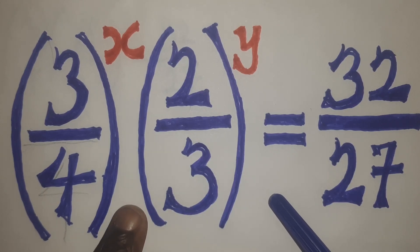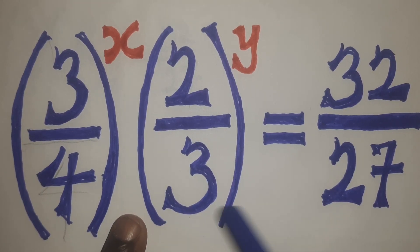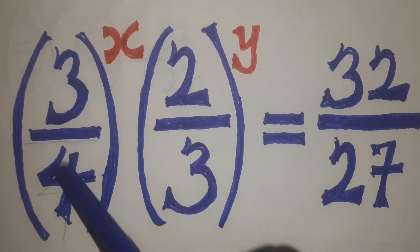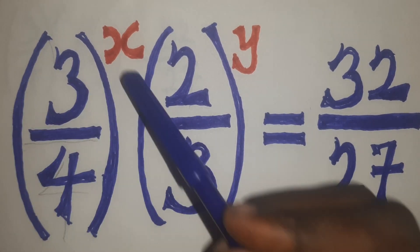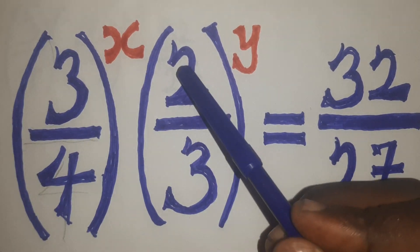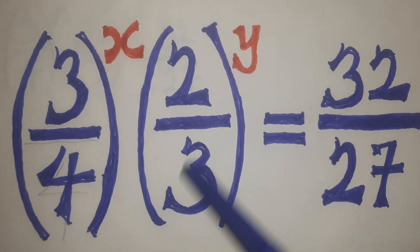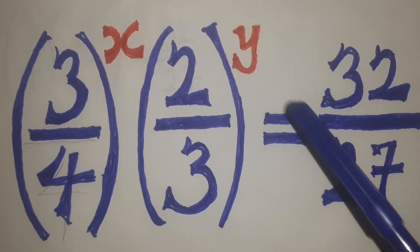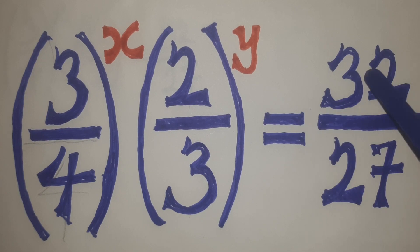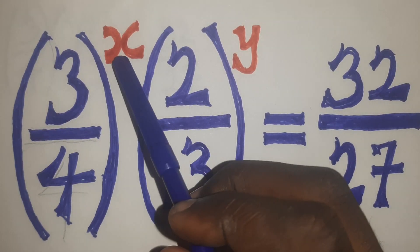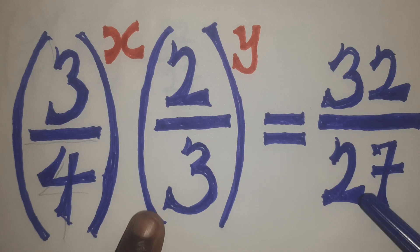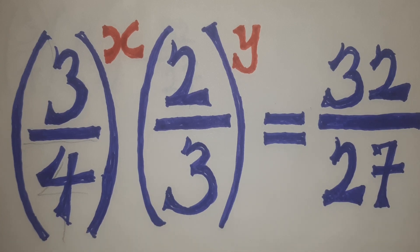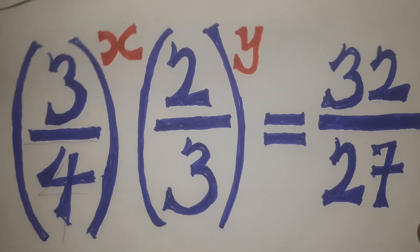We have this interesting exponential equation: (3/4)^x times (2/3)^y equals 32/27, and we are asked to find the value of x and y. So let's get right into it.